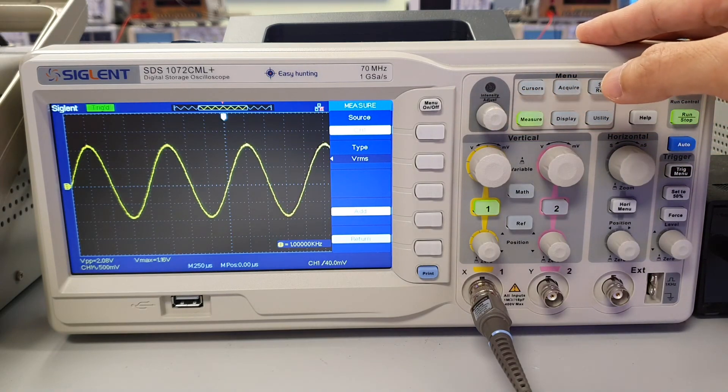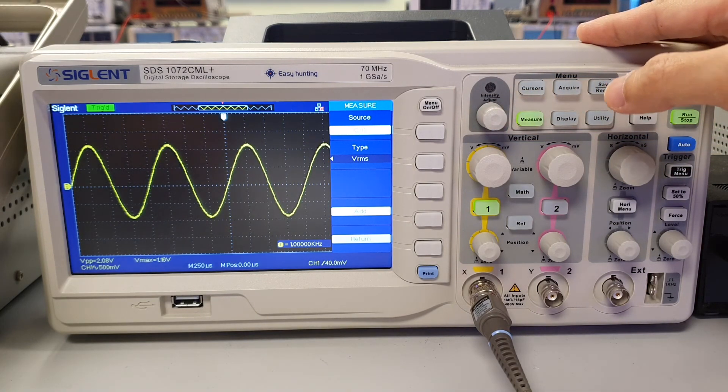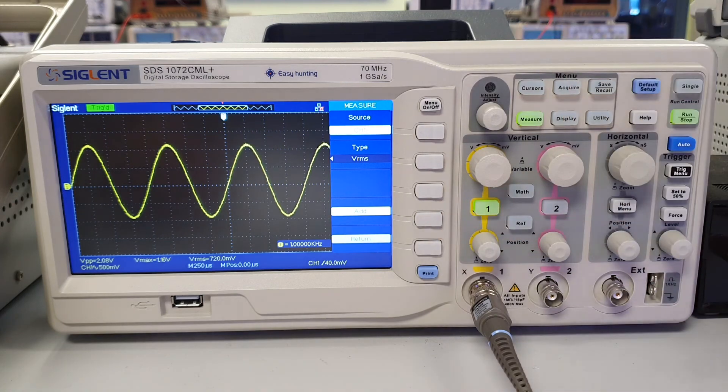To display the measured value of the RMS voltage, press add.